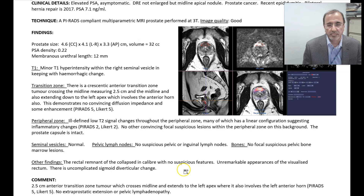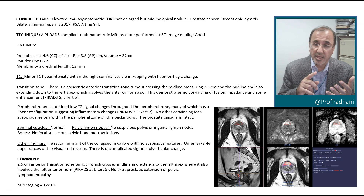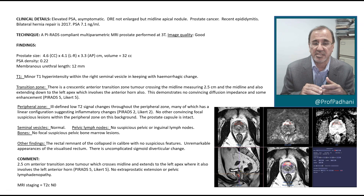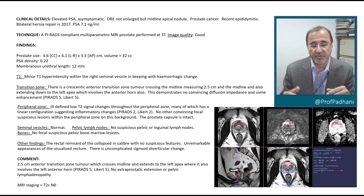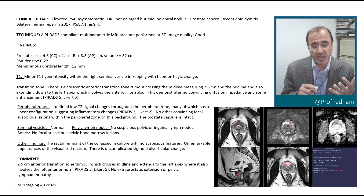A PIRADS-compliant MRI report starts with clinical details, whether imaging was PIRADS-compliant, and a statement about image quality. Then we document prostatic size, calculate PSA density, comment on hemorrhage, and specifically mention the transition zone, peripheral zone, seminal vesicles, pelvic lymph nodes, bone involvement, and any other findings. In the final comment, we discuss the location and classification of any index prostatic lesion, give it a PIRADS score, and — because we work in the UK — also a Likert score and a putative TNM stage.